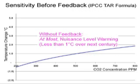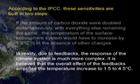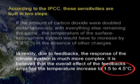Recognize that this first-step climate sensitivity of 1.2 does not get us to a catastrophe. It would imply a warming over the next century of less than one degree. The catastrophe comes instead from the second step. Complex feedbacks in the climate system are assumed to multiply this number by a factor of three or more, which is how higher sensitivities and forecasts are reached.